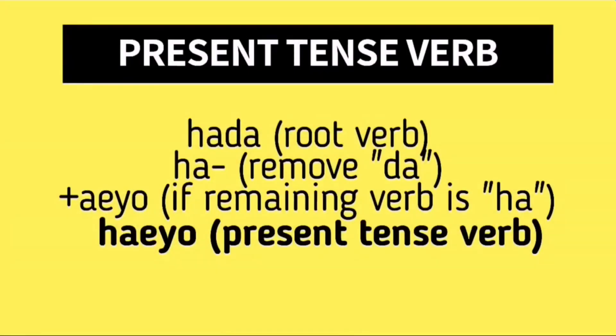How is Hada transformed into Heo? Initially we have Hada as our root verb, and then we remove Da, so we're left with Ha. We then decide what suffix to add. The suffix is Heo, so Ha plus Heo becomes Heo, and that is the present tense form of Hada.